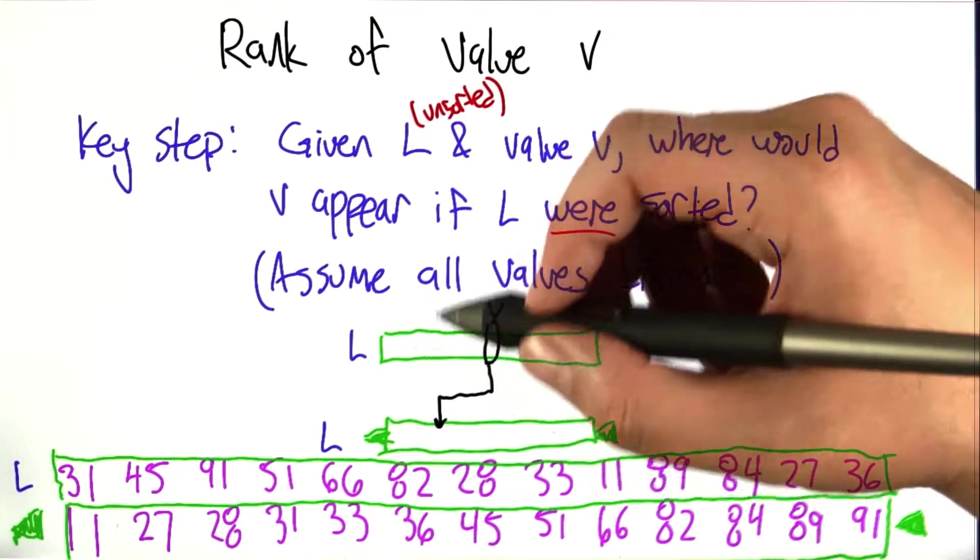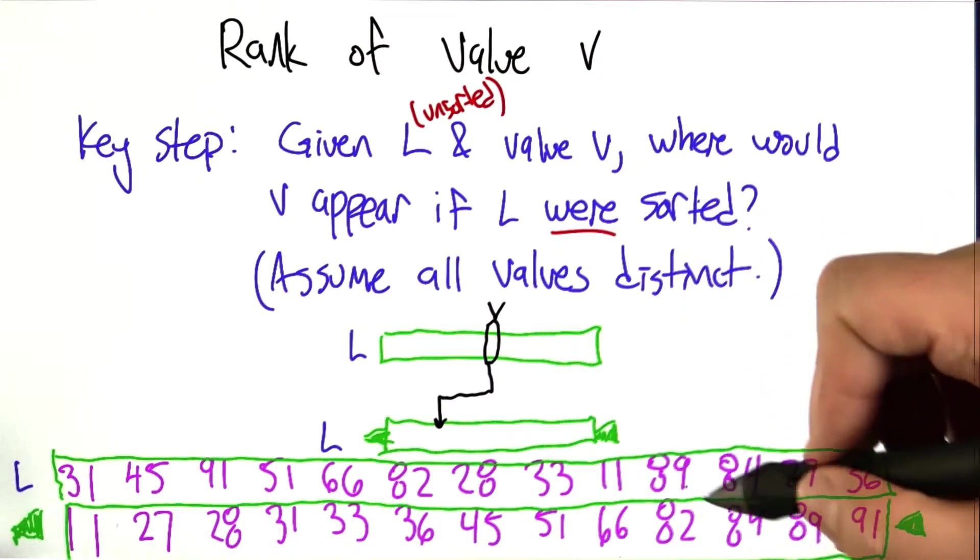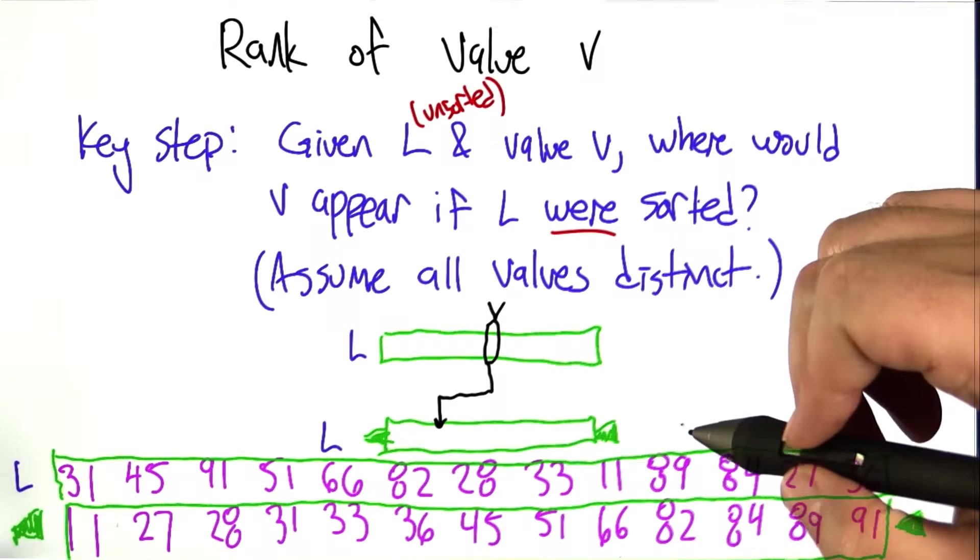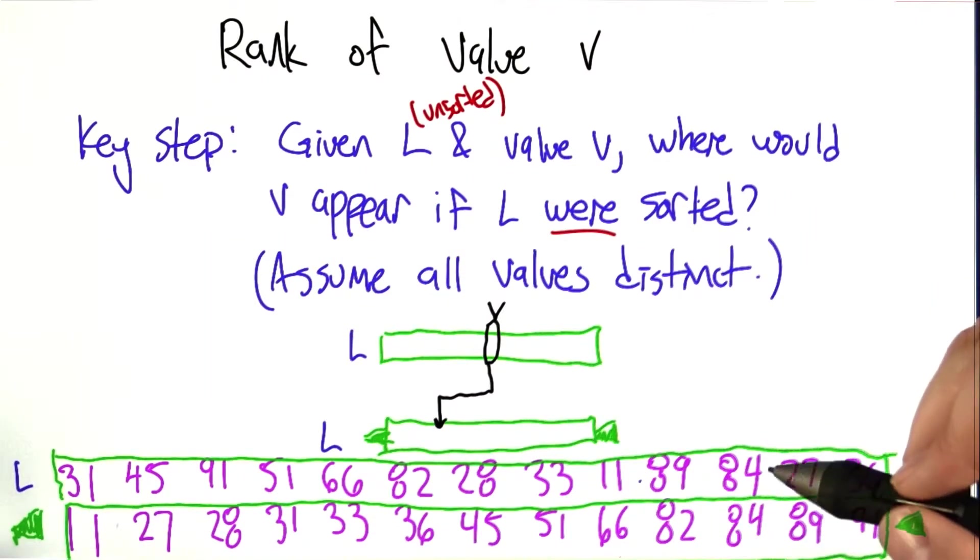Here's L. This is an unsorted list of unique numbers. They're all two-digit numbers just for my own sanity in writing them down. And then this is the sorted list, L. It's the same elements, but I put them in order.